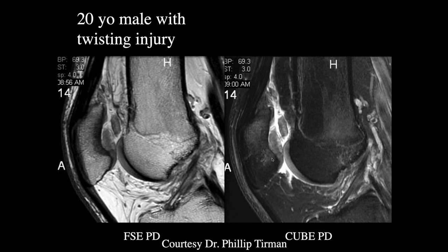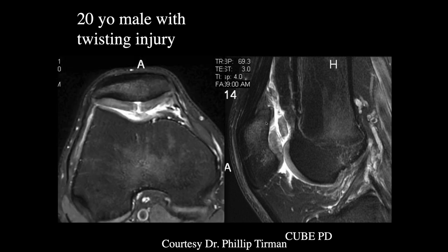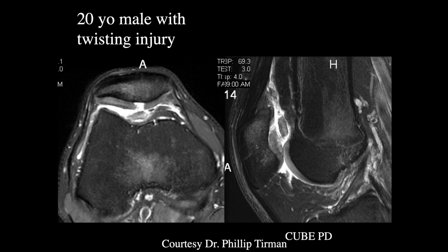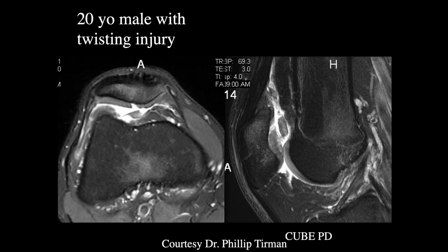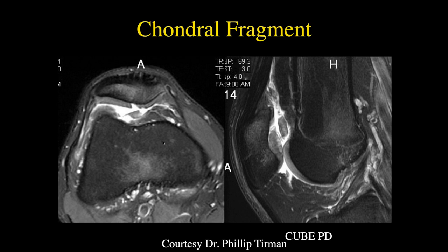Looking at two sagittal images comparing FETSAT and 3DQ: there is an osteochondral delamination injury of the patella with a free-floating cartilage fragment in the suprapatellar joint space and a focal defect with early delamination. This is probably a subacute injury with bone edema and a comminuted loose fragment. The fat-suppressed technique shows the detail of this acute osteochondral fragment.